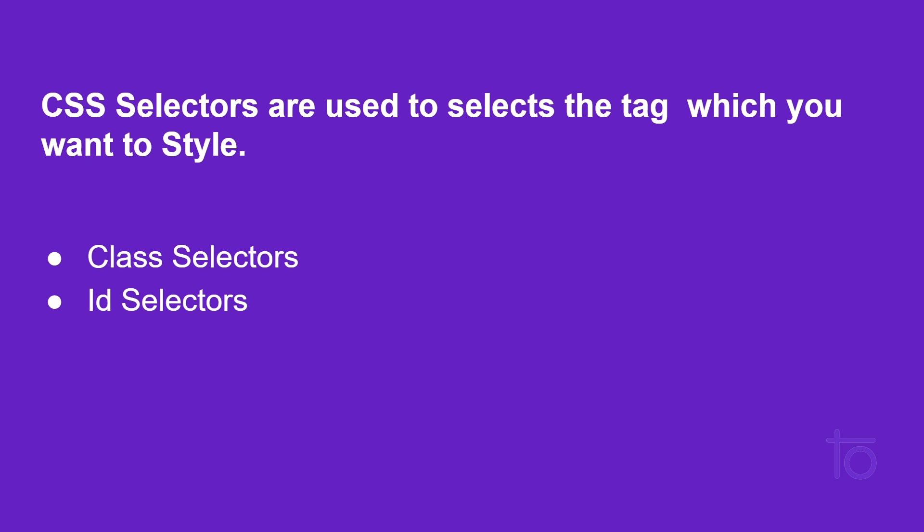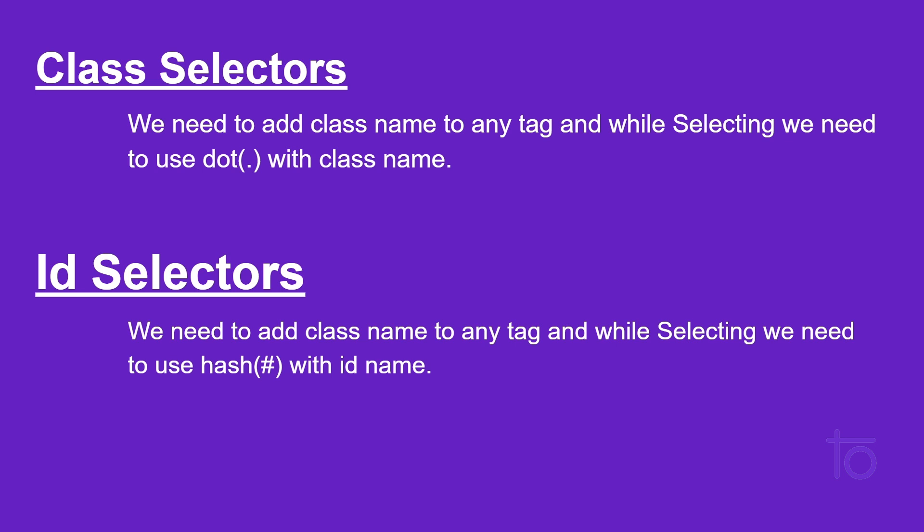We are going to see the difference between class and ID selectors with examples. To give a brief theoretical idea: when you write a class name inside a tag and want to access it in an internal stylesheet, you use a dot followed by the class name, then curly brackets with properties in key-value pairs. For ID selectors it's the same, but instead of a dot you use a hashtag followed by the ID name. The idea will become clearer when we look at examples in VS Code.